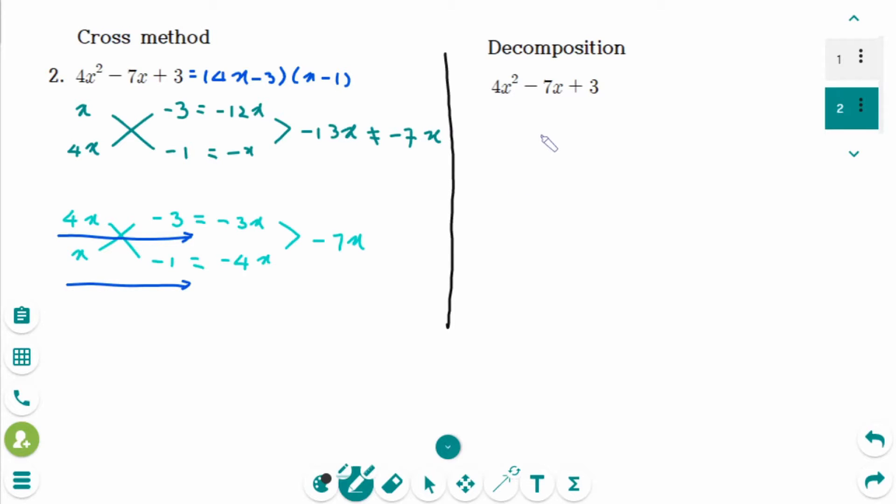The second method is decomposition. We are looking for the two numbers that have a sum of minus 7 and the product of 12, these two numbers. And then they are minus 4 and minus 3.